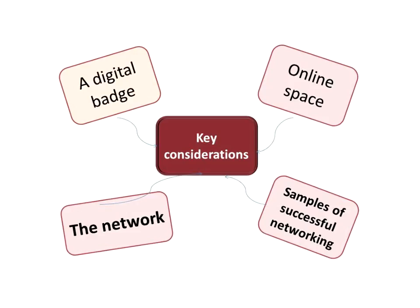We might put some of those points on the Google Doc later. When we are networking, these are our key considerations: we need a digital badge, a brand, or an avatar — something that identifies us that is positive and transparent to a certain degree. We need that network to be able to do all the things we just said, and we definitely need an online space. Then I'm going to show you some stories from my classroom.